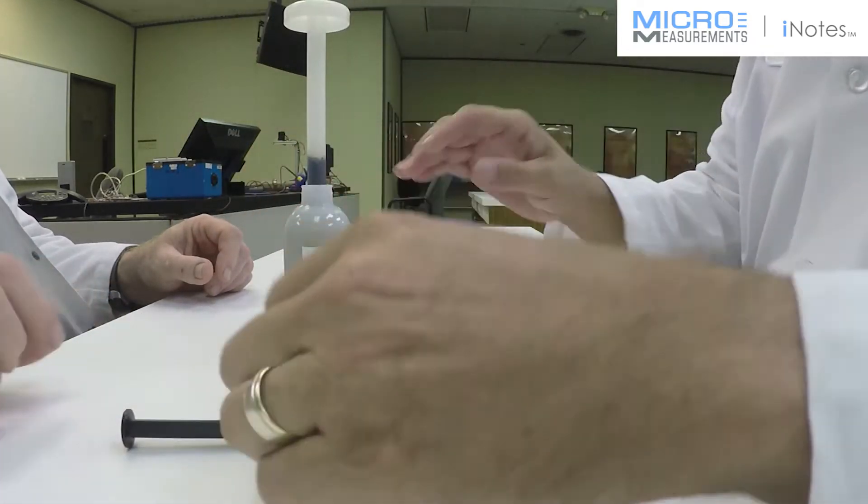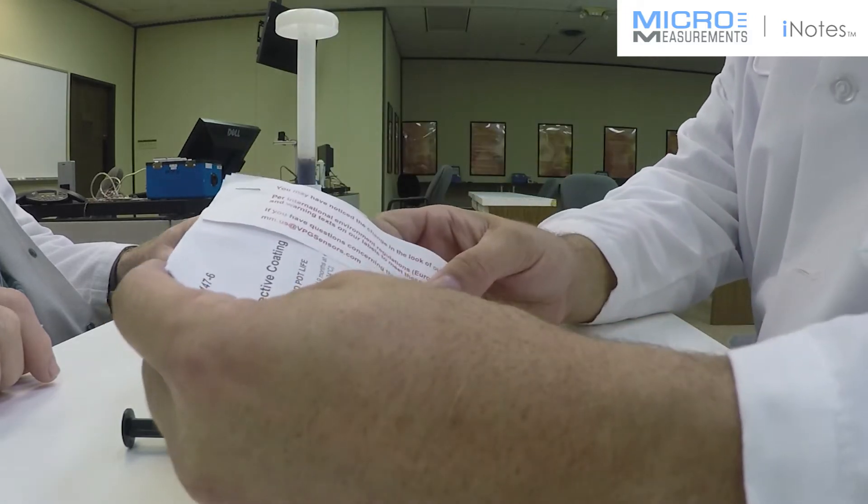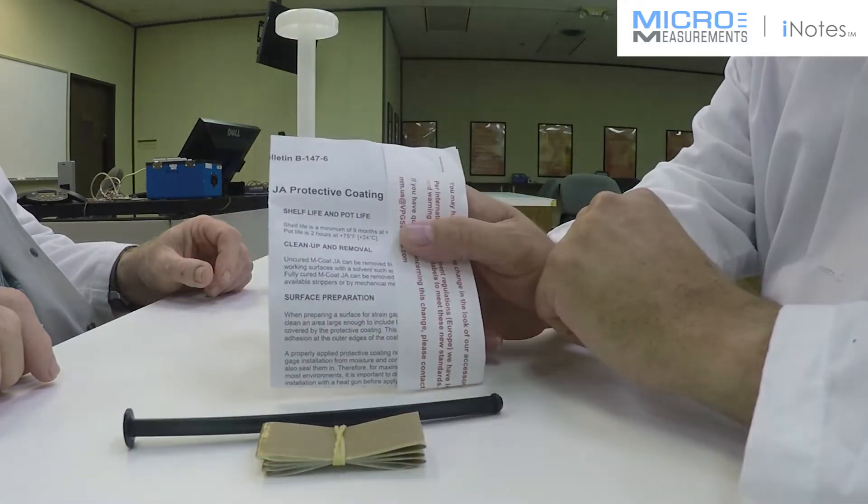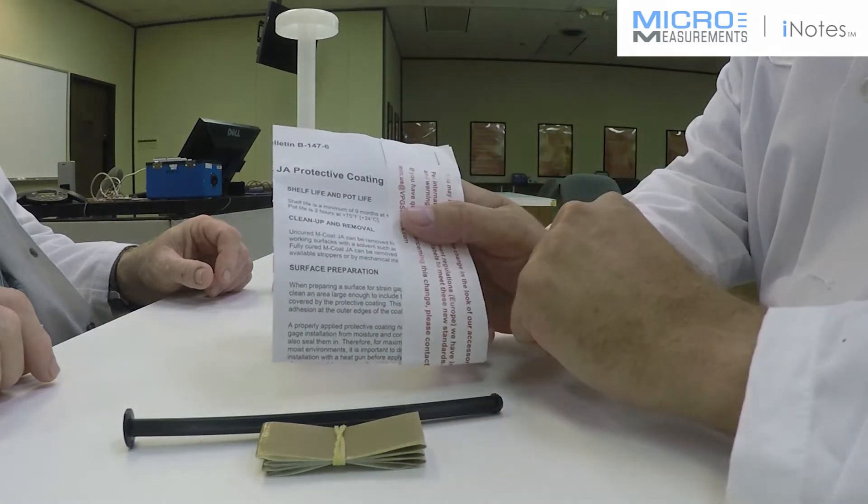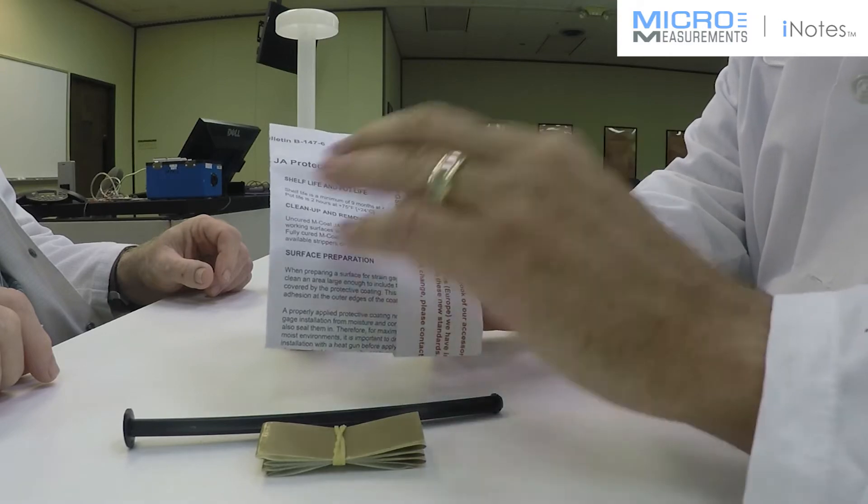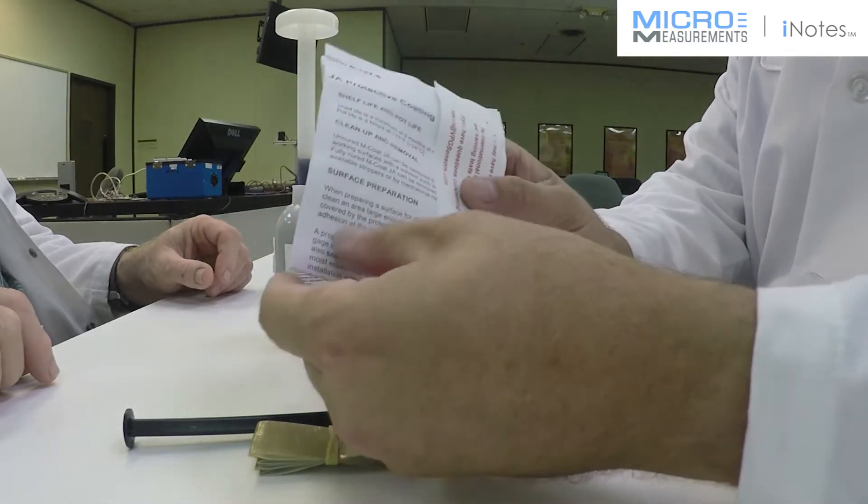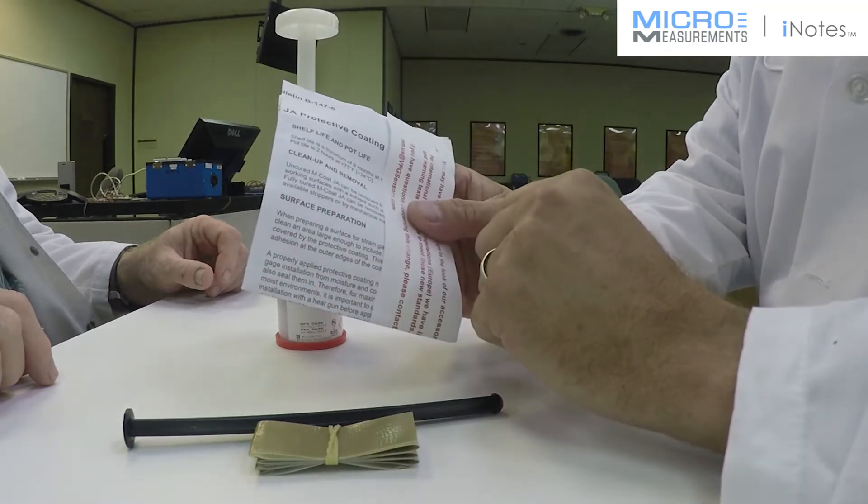So we've got a couple of items in here. First off, you've got instructions on how to use it. It'll list things like the shelf life and the pot life, how much time you have to use the material before it starts to kick over and cure. Also a little bit on cleanup and surface preparation, basically things you need to do to the surface of your part before you apply it.